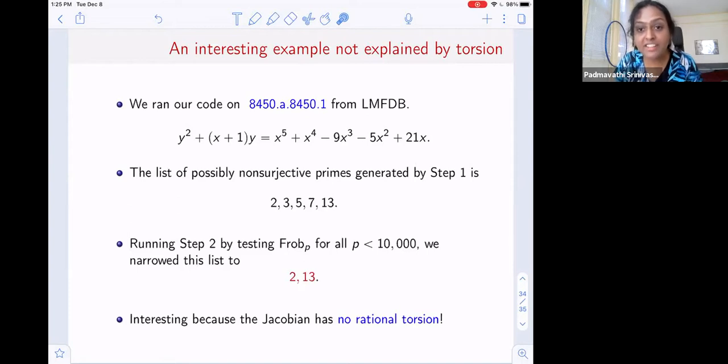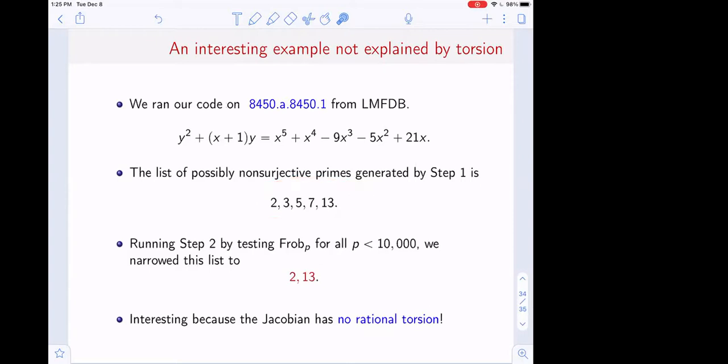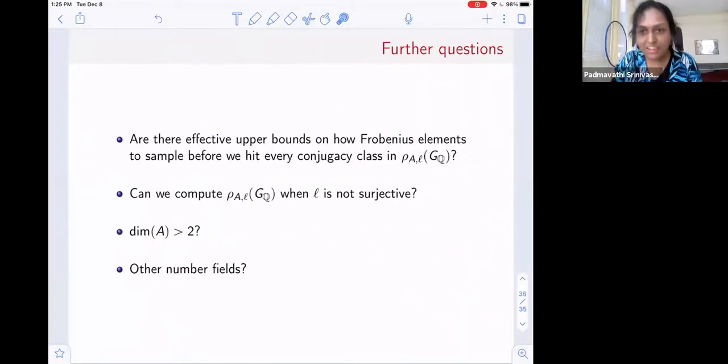Isogenies block surjectivity. Those are all reasons for being non-surjective. This is the example that showed up earlier. Step one returned all these primes and the code from step two, we tuned it down to the smaller list. This is a non-torsion example.